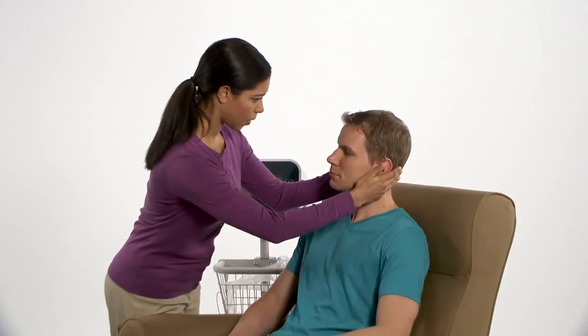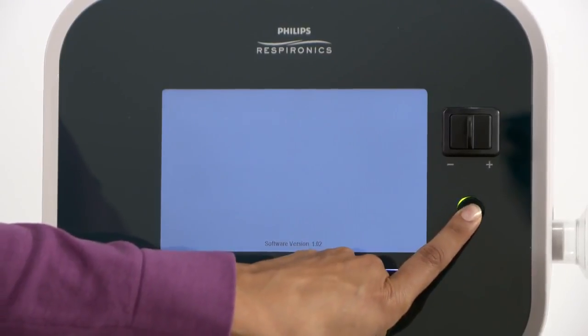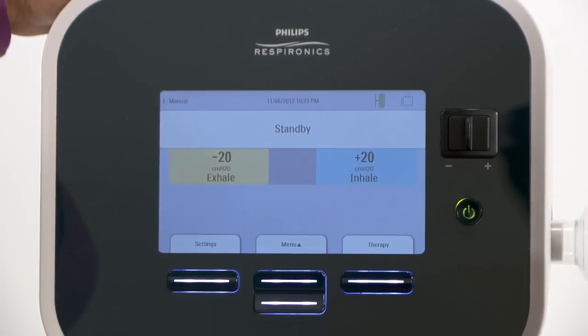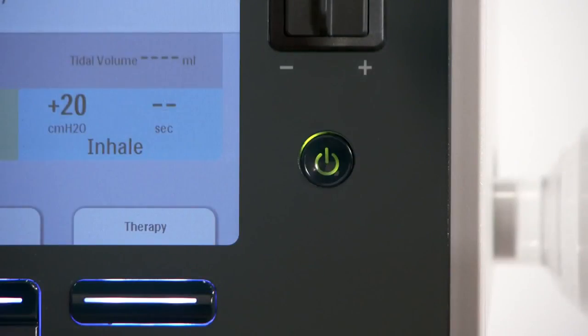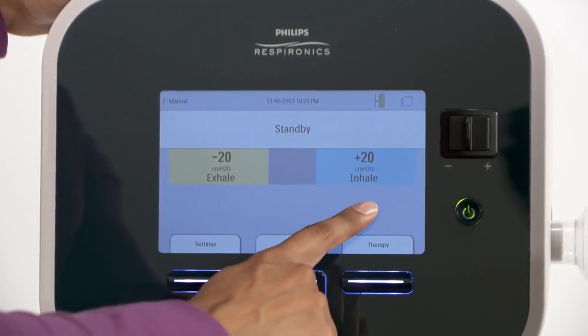Help the patient into as upright a position as he can tolerate. Press the round Start-Stop button on the front of the CoughAssist T70 to enter standby. If the device is running on AC power, the button will illuminate. Check the treatment settings to make sure they match the doctor's prescription.